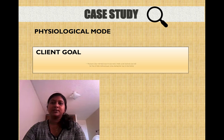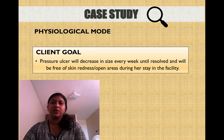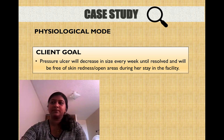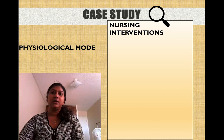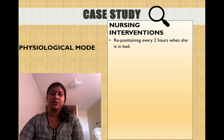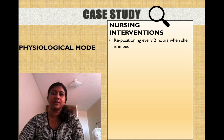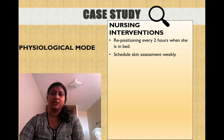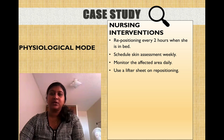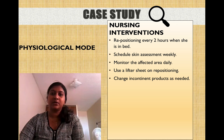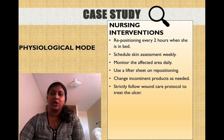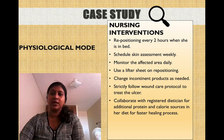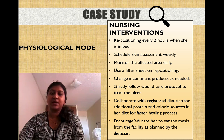Client goal: the pressure ulcer will decrease in size every week until resolved and she will be free of skin redness and open areas during her stay in the facility. Nursing interventions include: repositioning every 2 hours in bed to prevent joint contracture; scheduling weekly skin assessments; monitoring the affected area daily for skin color changes; using a lift sheet during repositioning to prevent friction; changing incontinence products as needed; strictly following wound care protocol; collaborating with the dietician for additional protein and calorie sources; and educating her to eat the meals planned by the dietician.